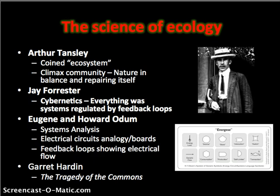From the film, we saw a number of theorists talk about ecology. Arthur Tansley is noted for coining the term 'ecosystem.' During this period in ecology, there was the notion of climax communities — that nature was working in lockstep fashion toward some ultimate stage depending on the particular biome. This brought in notions of stability and homeostasis, the idea that things would ultimately balance out. Jay Forrester picked up on these ideas with cybernetics — essentially, nature operates as a system regulated by feedback loops, making it self-correcting.